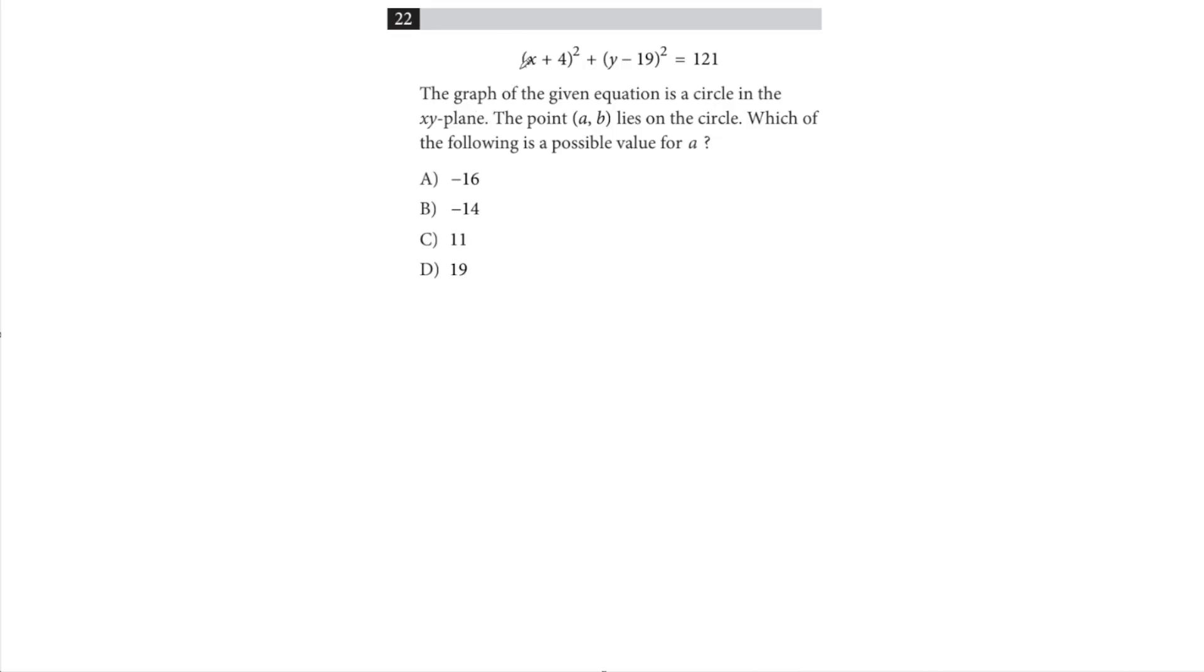So here we have the graph of a circle. We have x plus 4 squared plus y minus 19 squared equals 121. So right off the bat, it's important to make sure we just remember what these components of a circle are.